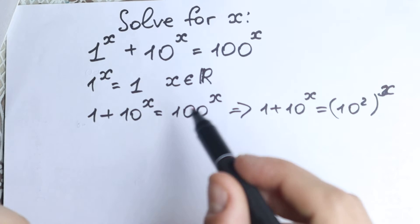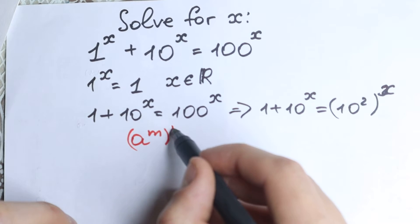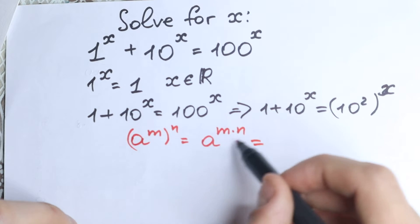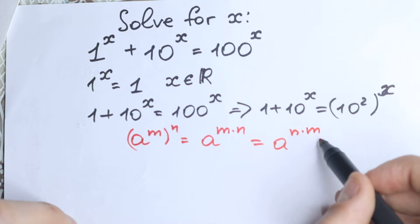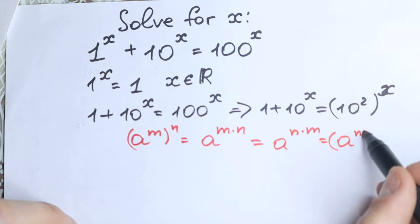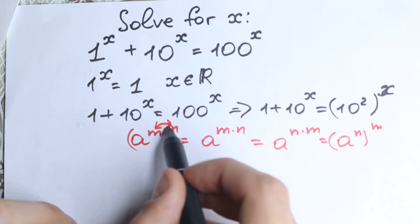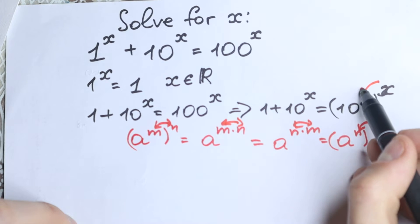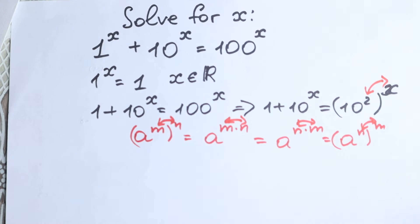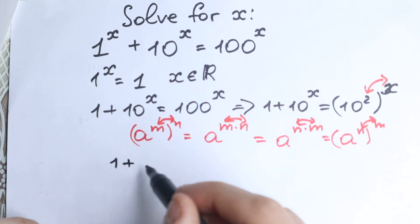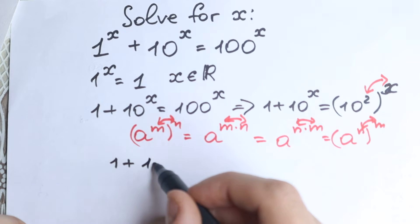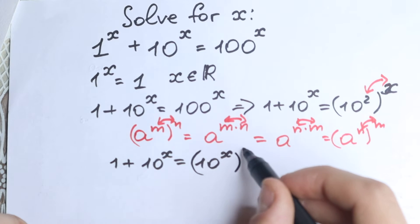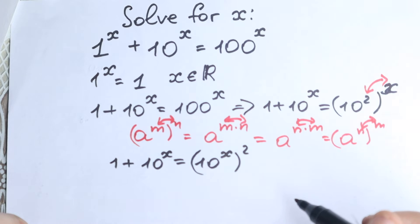The rule of interchange states: if we have a to the power m, raised to the power n, we can write it as a to the power m times n. And since it's a product, we can swap the order — n times m — so a to the power n times m. We can swap these powers. So let's swap this 2 and this x. After swapping, we have 1 plus 10 to the power x equals 10 to the power x, squared. This is our expression after these two simplifying steps.